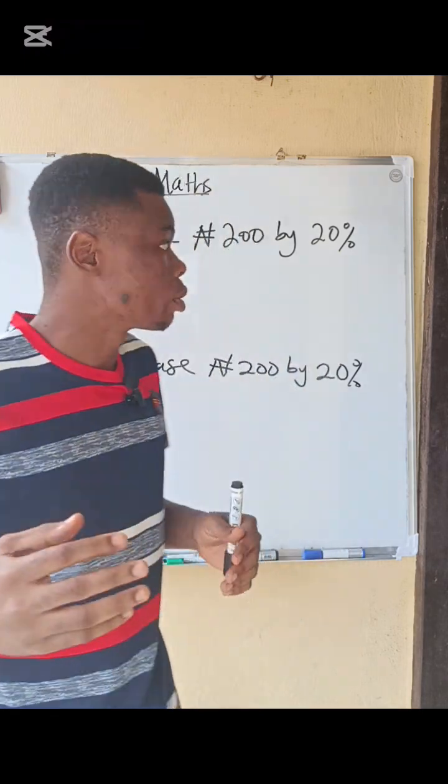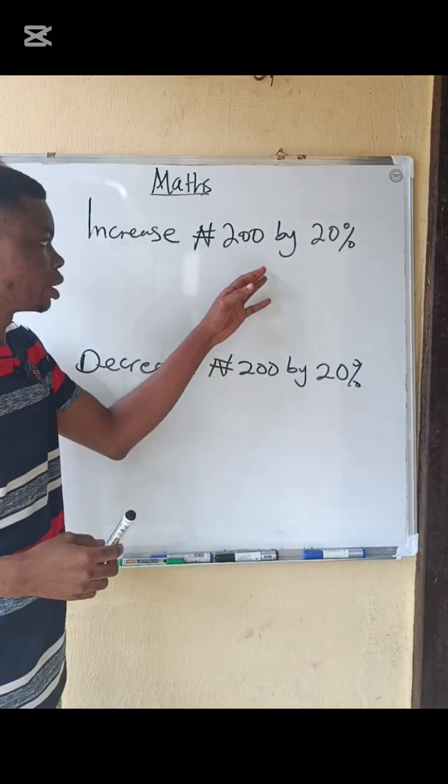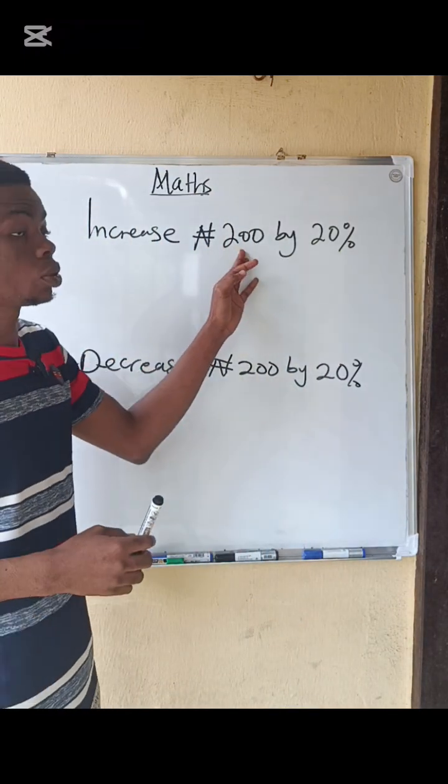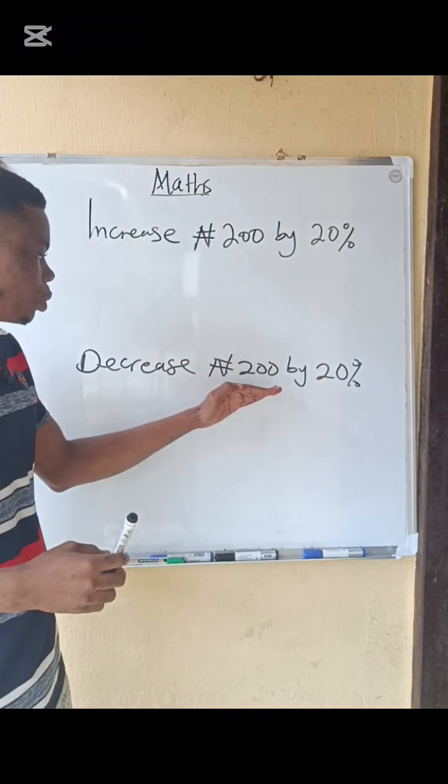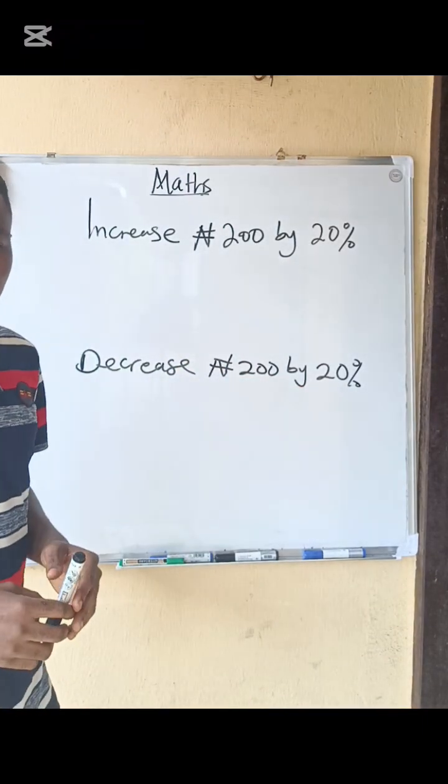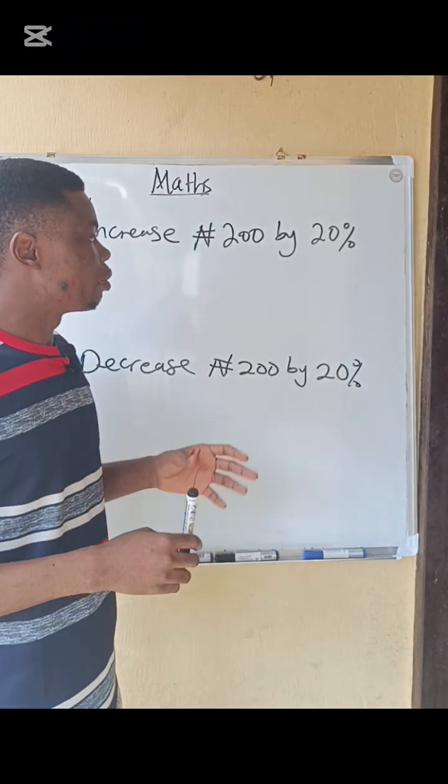Like what we have on the board, we are asked to increase 200 by 20%. The second one, we are asked to decrease 200 by 20%. What do we do?